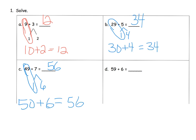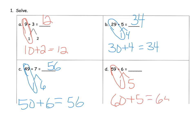Our last one on this screen: 59 plus 6. Well, 59 is pretty close to a multiple of 10 — it's pretty close to 60, we just need one more. So I'm going to decompose that 6 to 1 and 5. So 59 plus 1 is 60, plus 5 gives us 65.